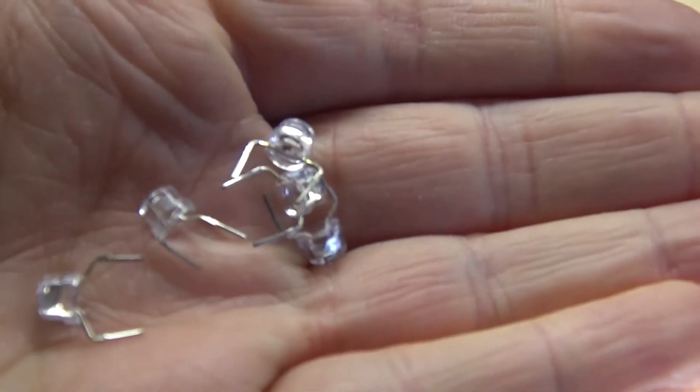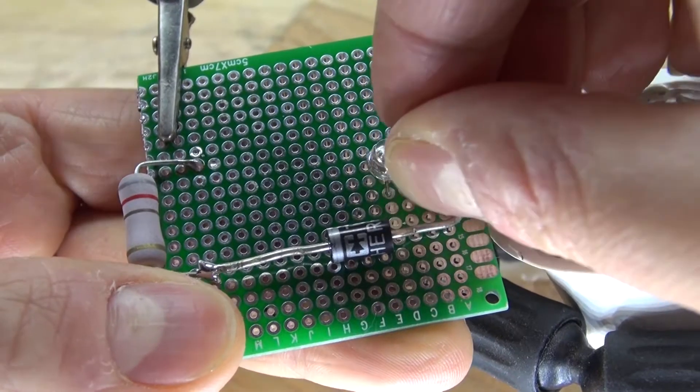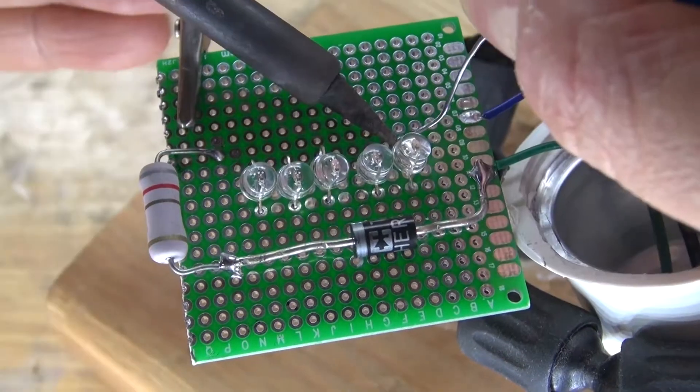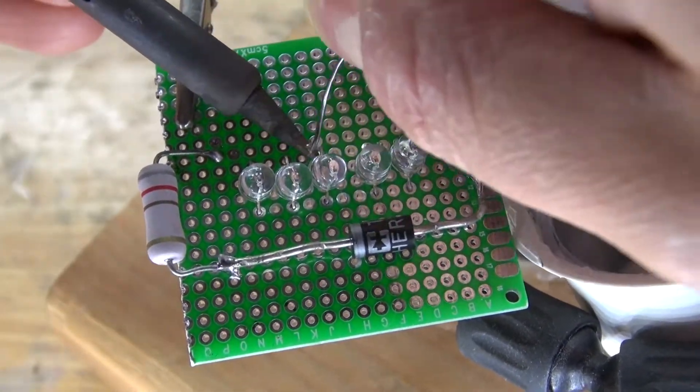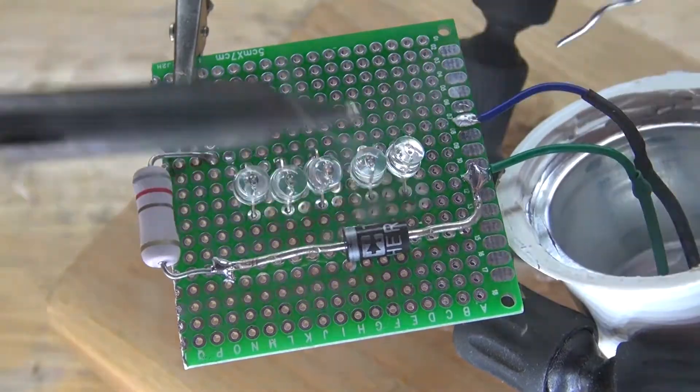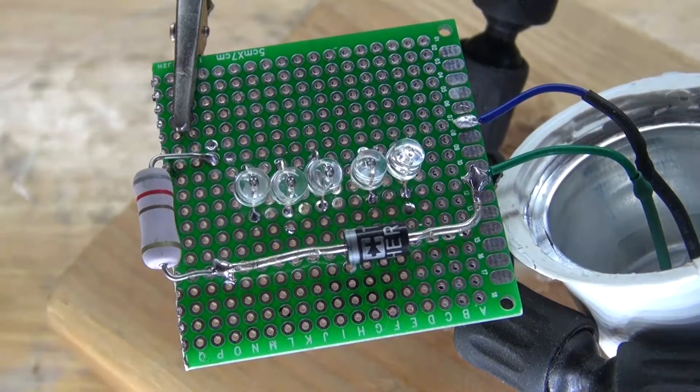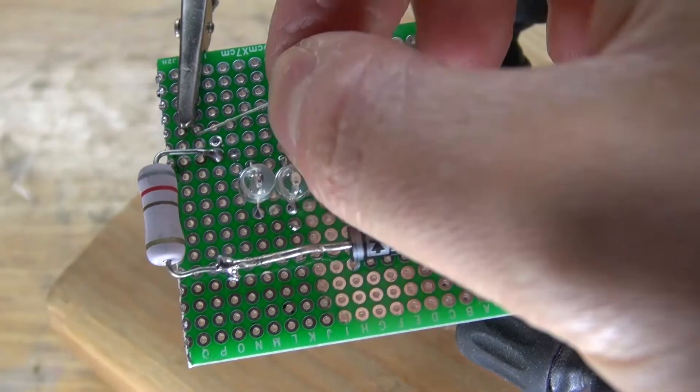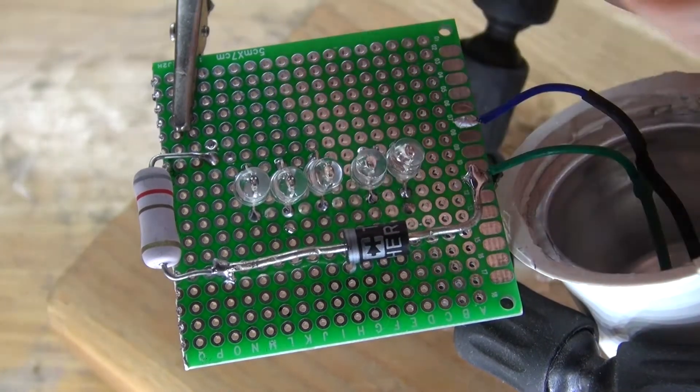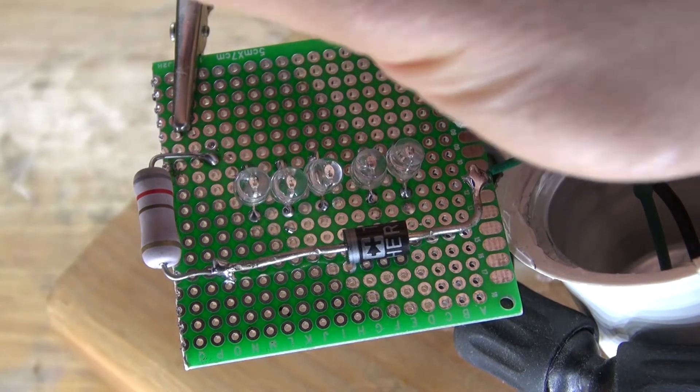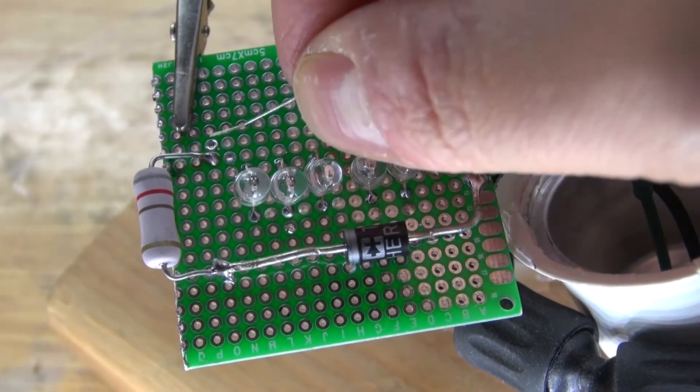Next I'm going to take the auto-changing RGB LEDs and place them into the perfboard into a parallel circuit. Solder them into place. And there we go. Next what I need to do is take this bridge wire and connect all the anodes to anodes and all the cathodes to cathodes.